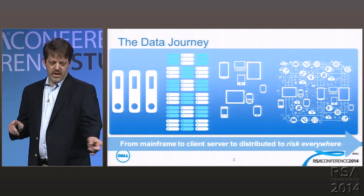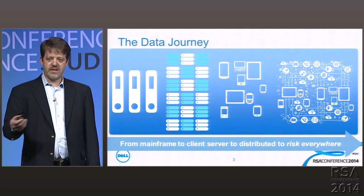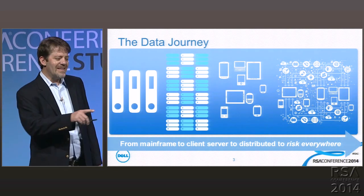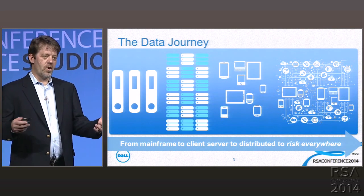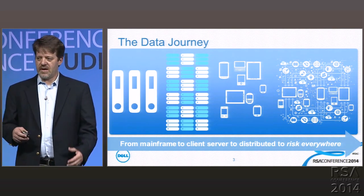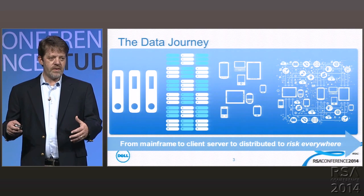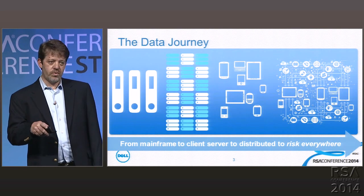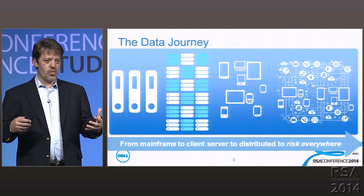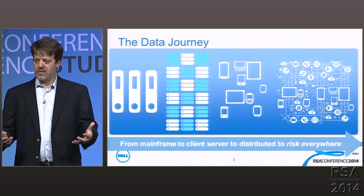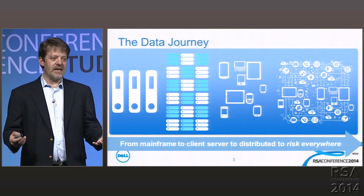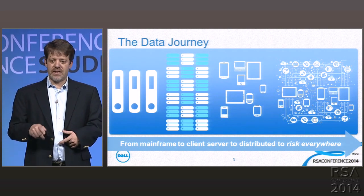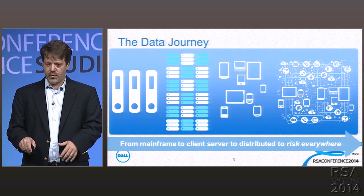Starting in 1944, going from left to right, we had our mainframes. 1968, workstations. 1978, transistors. Then in the early 1990s, we began to see the convergence of the internet. And now, today, risk is everywhere — everything is connected. It's your employees who now have this ravenous requirement to be always connected to data. That's where risk is everywhere, and we're driving down to protection at the data itself. That's where we need to be.